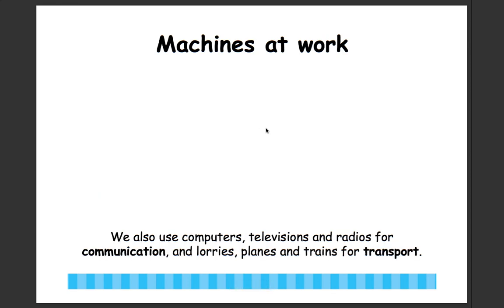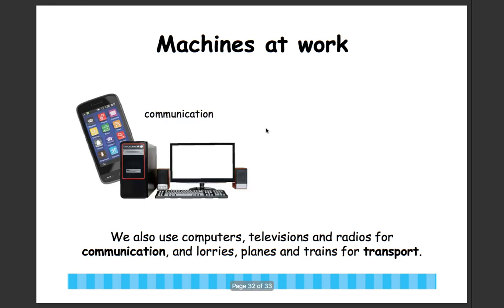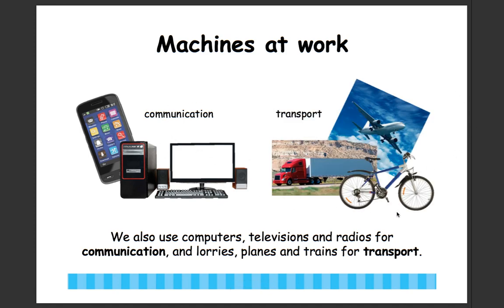We also use computers, televisions, and radios for communication, and lorries, planes, and trains for transport. Communication is transmitting a message from one person to another — we can use computers, telephones, or cell phones as communication machines. There are also transport machines, like airplanes, lorries, and bicycles, which help people or things move from one place to another.